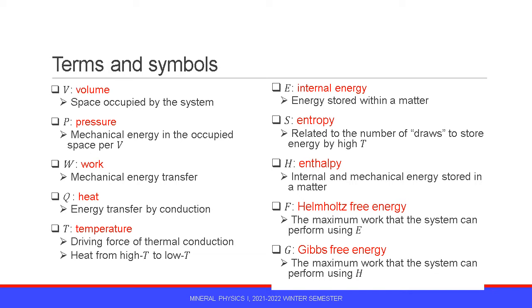This slide summarizes the terms and symbols used in thermodynamics. V is volume, which is space occupied by the system. P is pressure, which is mechanical energy per volume in the occupied space. W is work, which is mechanically transferred energy. Q is heat, which is energy transferred by thermal conduction. T is temperature, which is the driving force of thermal conduction.